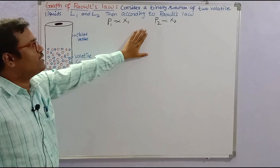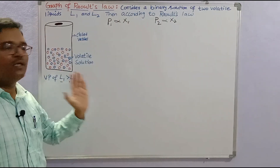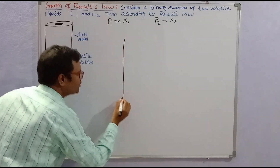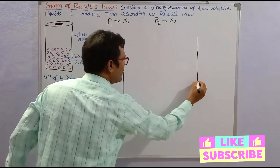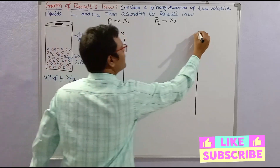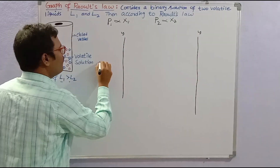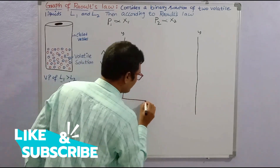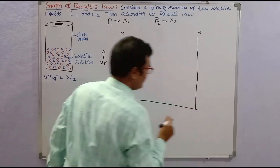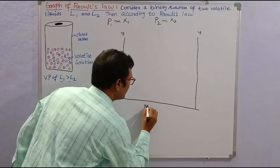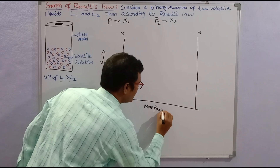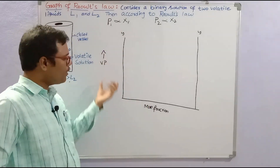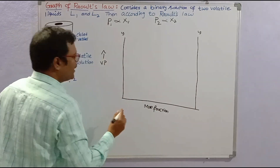The partial vapour pressure and mole fractions are related in the graphical formula. To draw the Raoult's law graph, we draw two vertical lines as the y-axis, where we plot vapour pressure. Then one horizontal line as the x-axis, where we plot mole fraction.